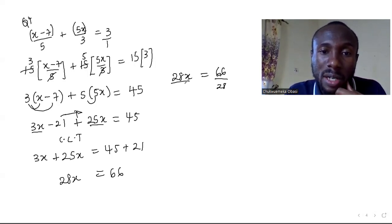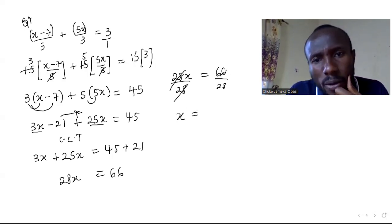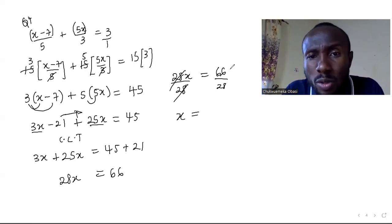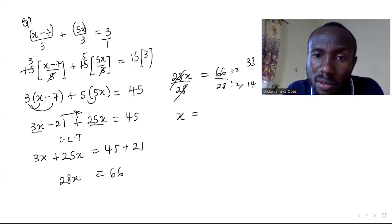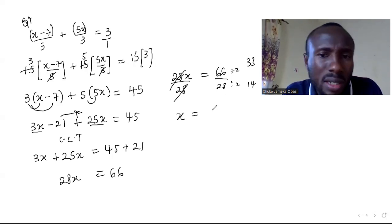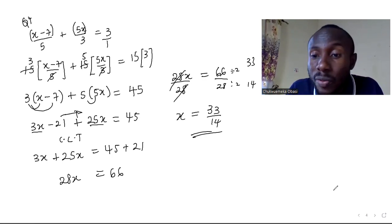Divide both sides by 28 — 28 cancels out — so x equals 66 over 28. Simplify by dividing by 2: 66 divided by 2 is 33, and 28 divided by 2 is 14. So x equals 33 over 14. That's the value of x for question 4.